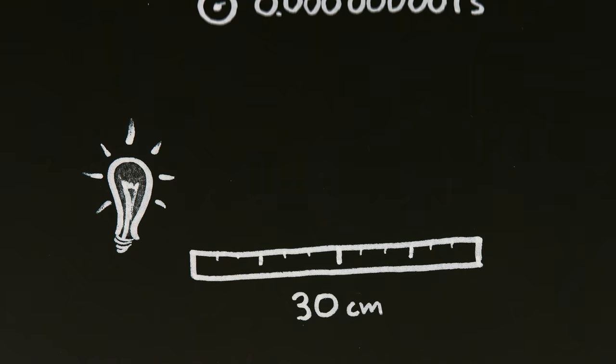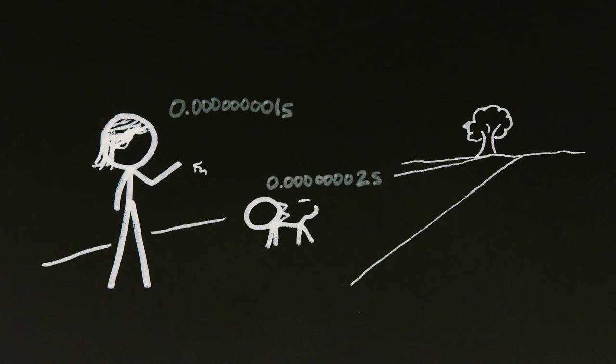Light travels at about one foot per nanosecond. Hold your hand up 12 inches from your face. You're seeing your hand as it was a nanosecond ago. Everything you look at is, to one degree or another, in the past.